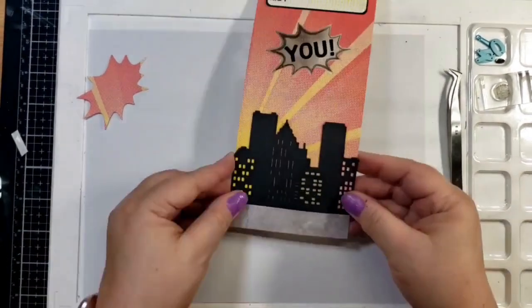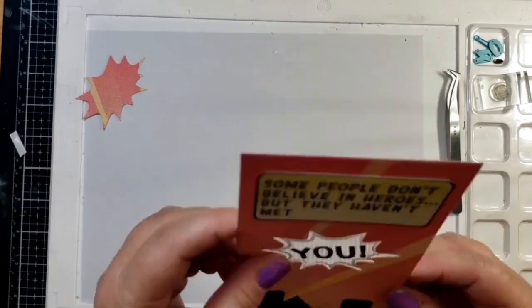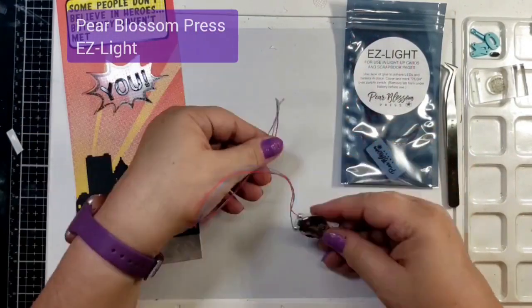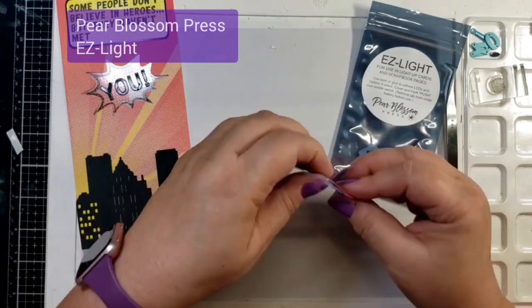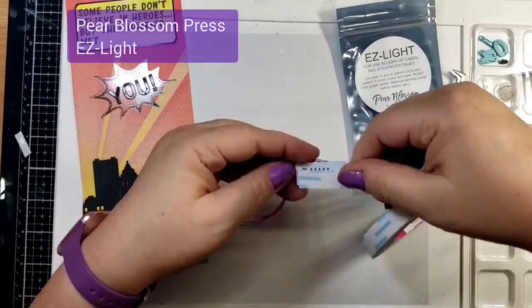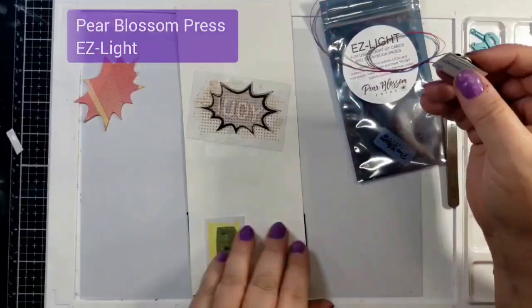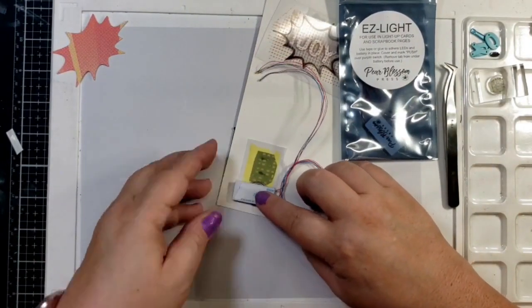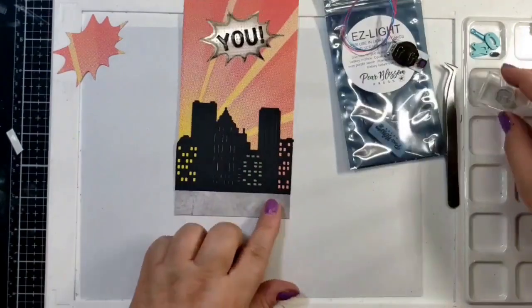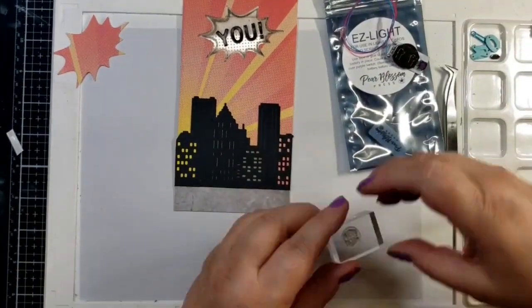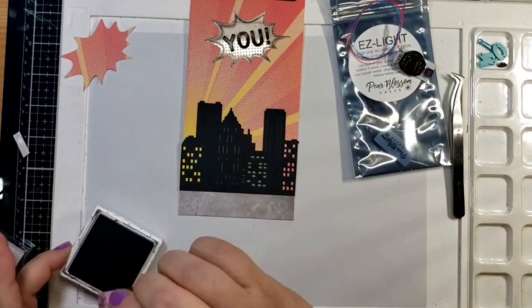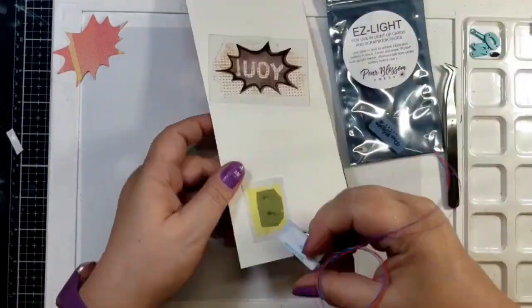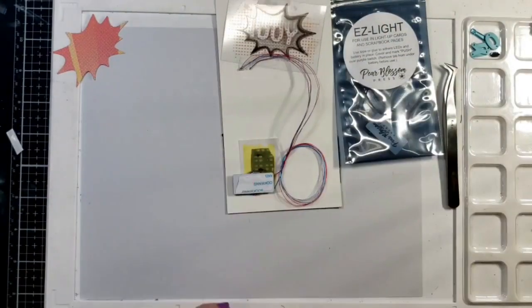So now we're going to go ahead and turn it over and we're going to use our easy lights. So the easy lights are great. It's a battery pack with a switch and three lights attached to it on wires. I am putting a piece of double-sided adhesive behind the battery pack because I'm going to use that later on to make sure it adheres to the card. And you're going to see me pressing the button many times. And this first time was to make sure I know where I need to put my press here stamp. And we go ahead and put that on the front. And that is where we are going to line it up.